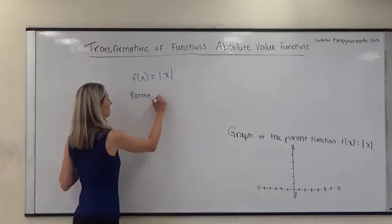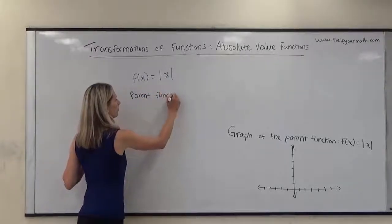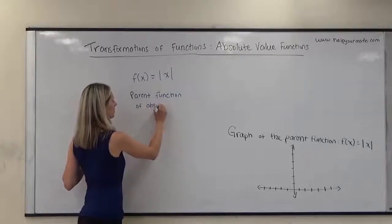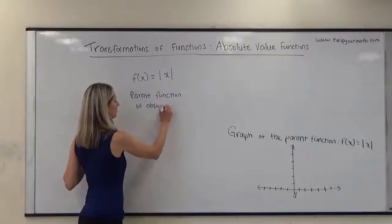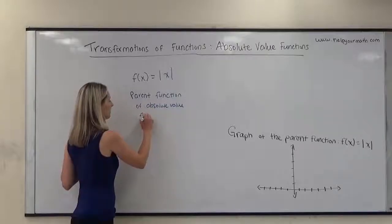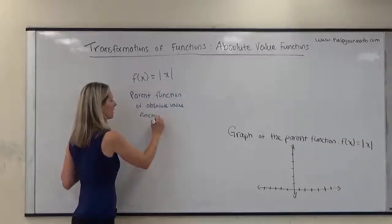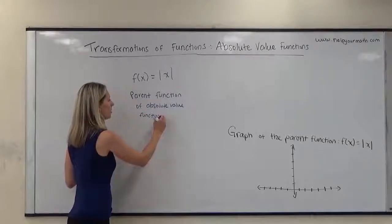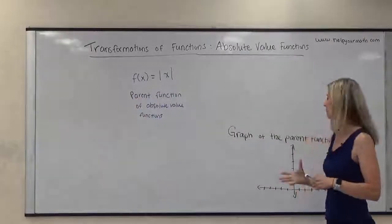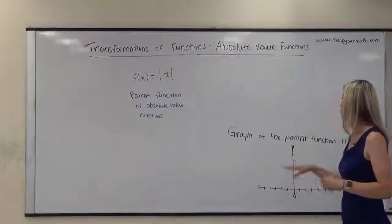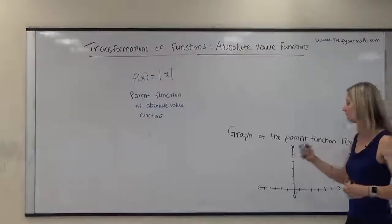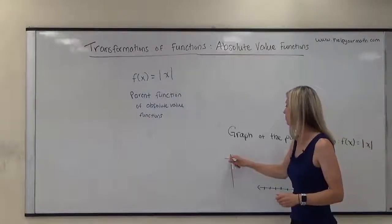This is the parent function. It's going to be really handy to know what this graph looks like so that way we know what the shifts will look like too. If you don't know what the graph looks like, it might be helpful to start out with a table of values.